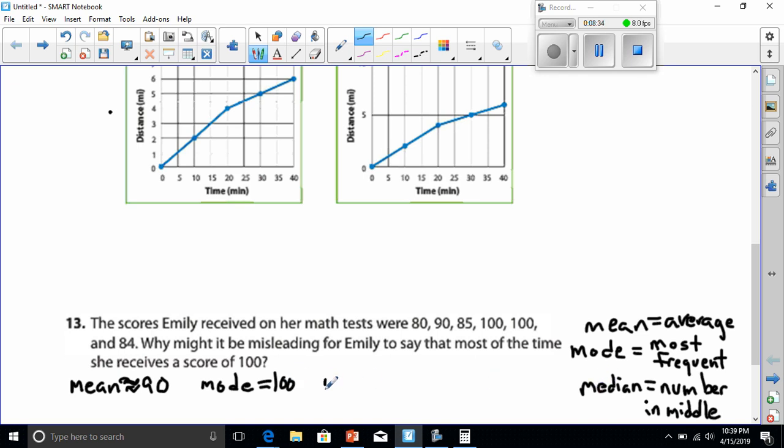Lastly is the median. And remember, the median is the number in the middle when you put them in order. If I put these all in order, I have 80, 84, 85, 90, 100, and 100. Remember, we bounce from one side to the other until we've got the middle. So there's 1, 2, 3, 4, 5, and 6. We have to find the middle, the average of 85 and 90, which is going to be about 87.5.